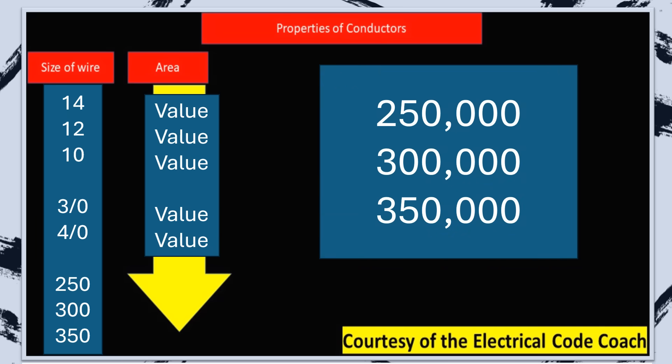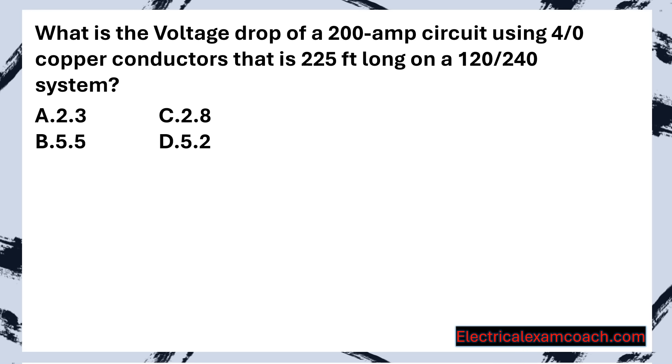So we have 250,000, 300,000, 350,000. Once you get past 4/0, you're going to get into 250, 300, 350,000, and all you have to do is add on the three zeros. What is the voltage drop of a 200-amp circuit using 4/0 copper conductors that is 225 feet long on a 120/240 volt system?